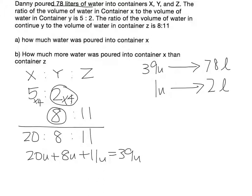Hence, part A, to find the amount of water poured into container x, x is 20 units. So let's find 20 units. That would be 20 times 2, 40 liters of water. This is the answer for part A.